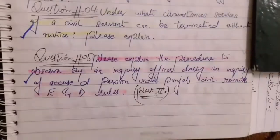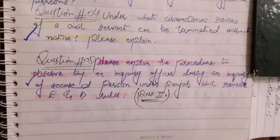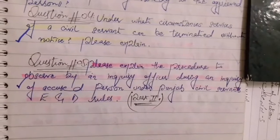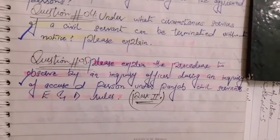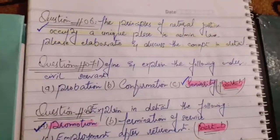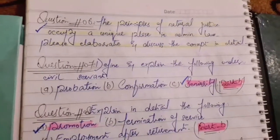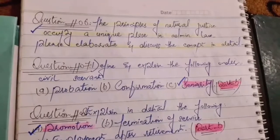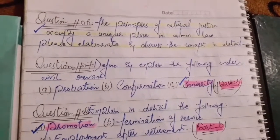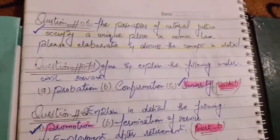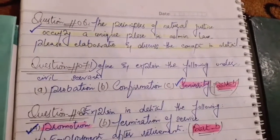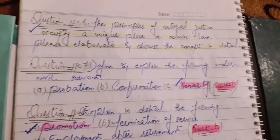I have discussed the five most important and most repeated questions. Moving towards the second part: the principles of natural justice occupy a unique place in administrative law. The principle of natural justice has its own place in administrative law.